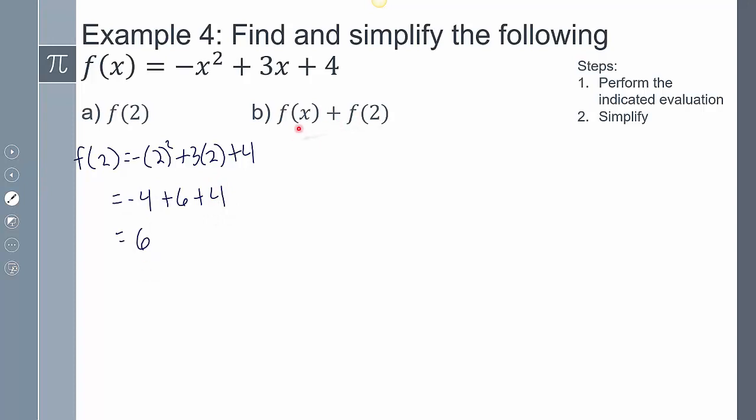Now this one's a little different. This one says take your f of x function and add it to your f of 2 function. And so there's my f of x function and add it to my f of 2 function, which is technically what I just found here. And so I know if I simplify that down, I'm going to get it 6. And so now I take the 6 and I add it to my f of x function. And so I'm going to get this value here. And that's going to be my answer.